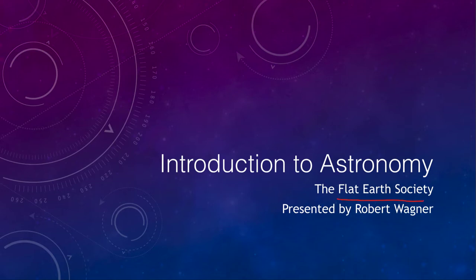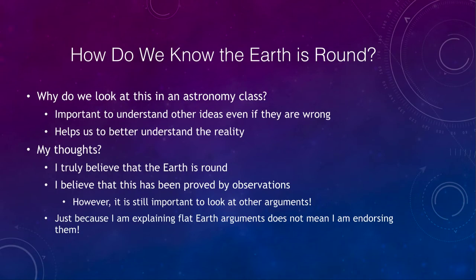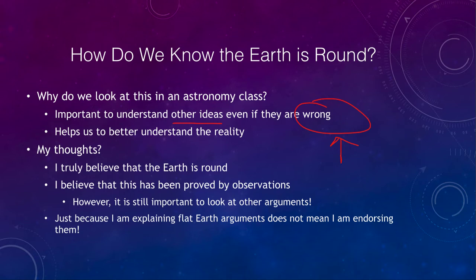One of the reasons we want to look at this in an astronomy class — when flat earth ideas are not really astronomical — is that we really need to look at other ideas even if we know they are wrong. I believe the flat earth people are completely wrong, that the earth is not flat, that it is very much spherical, and that we have significant evidence demonstrating that over the centuries. But it helps in any discussion to be able to look at the arguments an opposing group puts forward and to better understand and argue against them.